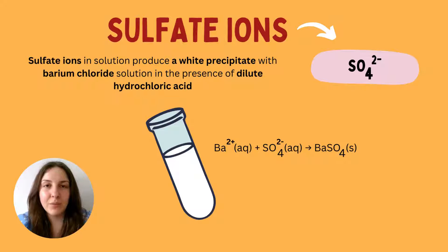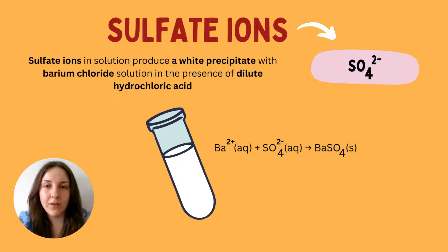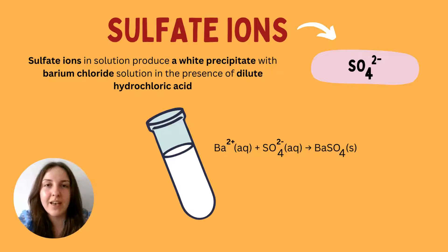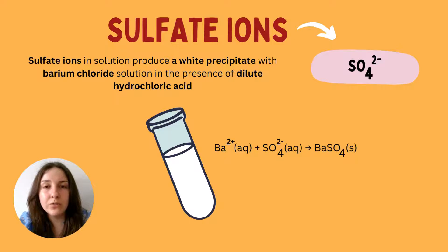Another anion you need to know about is the sulfate ion, SO₄²⁻, which carries a two-minus charge because it has accepted two electrons. Unlike halide ions, sulfate ions have this two-minus charge.